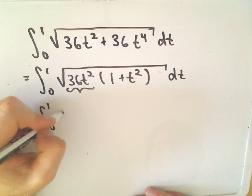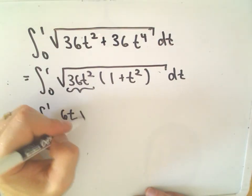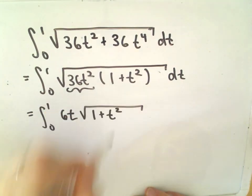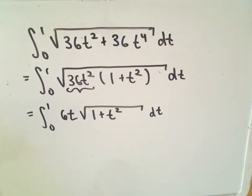The square root of 36 is simply 6. The square root of t squared will simply be t. And again we're on, excuse me, underneath the integral we have this 1 plus t squared. And now it's simply a matter of doing a u substitution to integrate this.